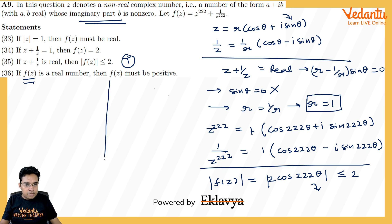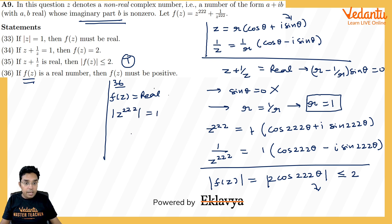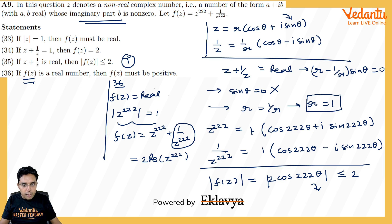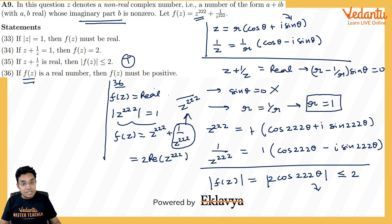Part 36: if f(z) is real, we showed similarly that |z| = 1, so f(z) = 2Re(z²²²) = 2cos(222θ). This can be any value in [-2,2], including negative values. The claim that f(z) must be positive is wrong. False. Answers for Question 9: True, True, True, False.